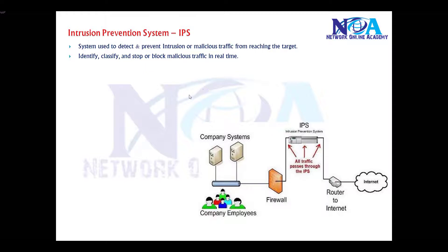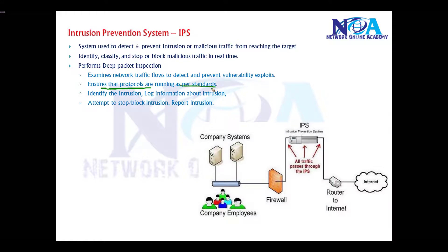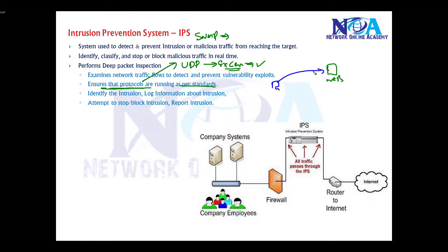The IPS performs deep packet inspection at the network level or host level, examining traffic flows to detect vulnerabilities or exploits used by attackers. It ensures protocols are running as per standards. For example, if there is excess UDP traffic that is not normal, or SNMP traffic behaving differently than normal, or if an attacker on the internet is trying to initiate an FTP session to a web server — that is unusual activity which IPS can detect.